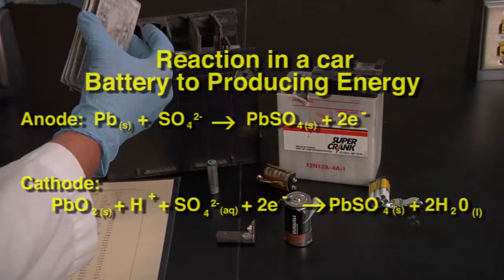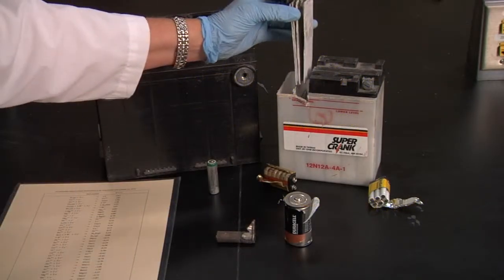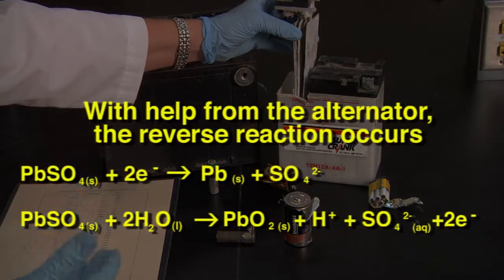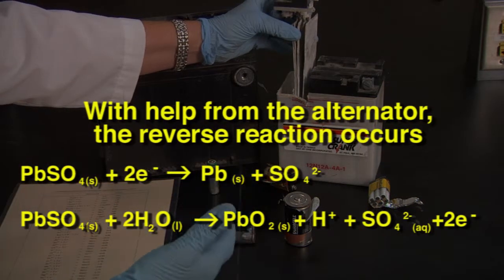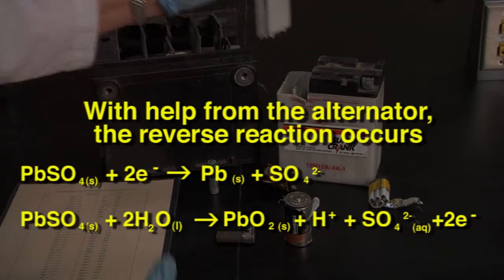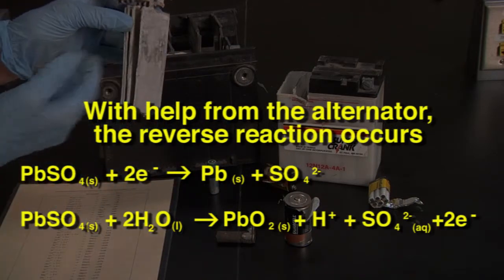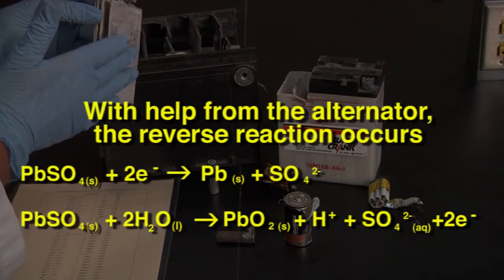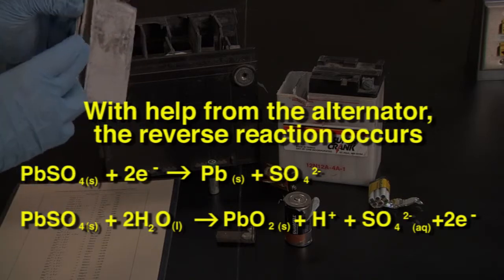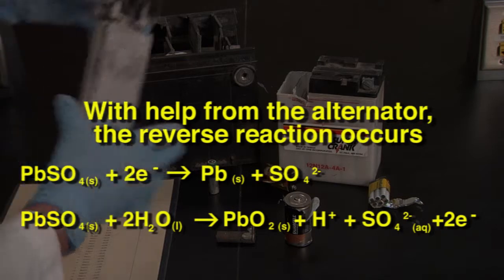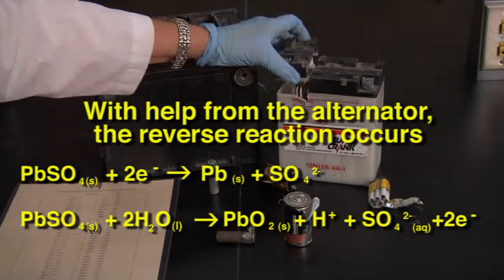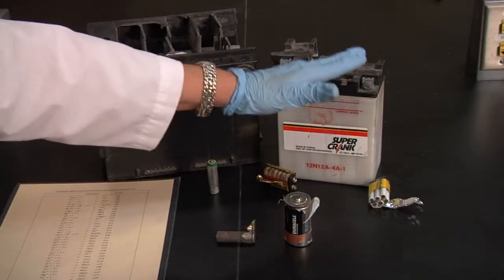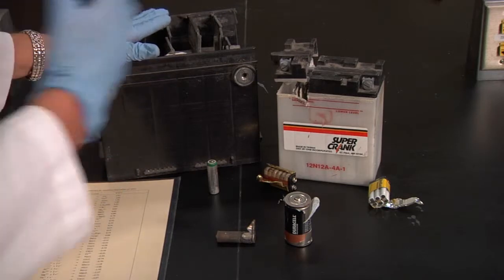Then at the same time as your car is running, your alternator is taking that energy and running the reaction in reverse, taking the lead oxide and replacing the lead. So that's how you can have a rechargeable battery is you're forcing the electrons in one direction. When you're using it, they're going in the opposite direction.